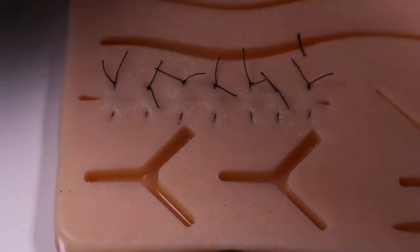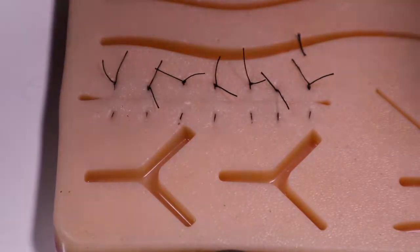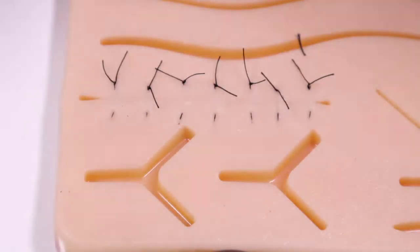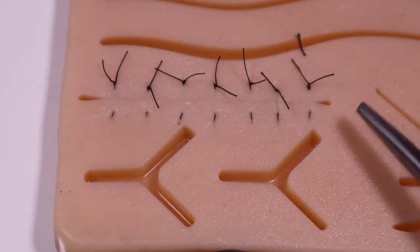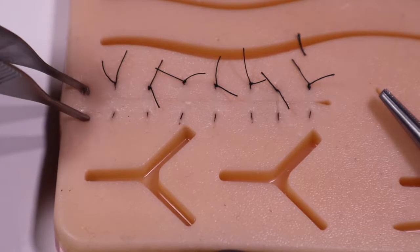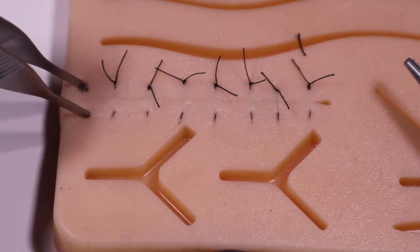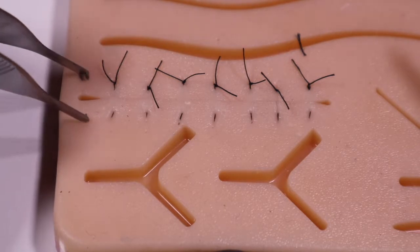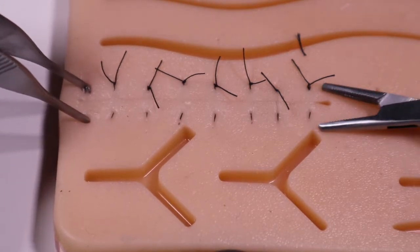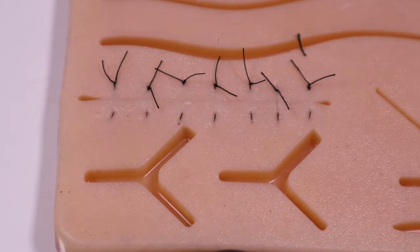Now because of the design of this particular laceration on the suture board, it has rounded edges so those edges are not closed. If we wanted to close that on the suture board we could put another suture just right on the end, but most lacerations will not have those rounded edges so that would be closed.